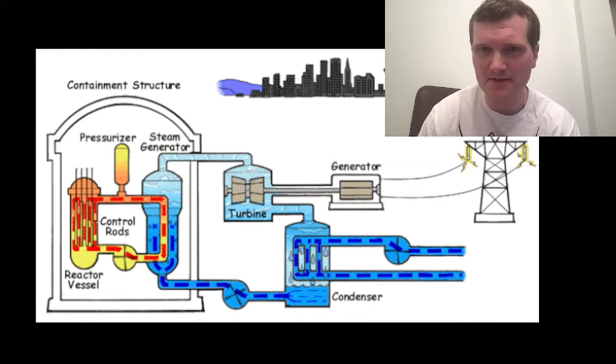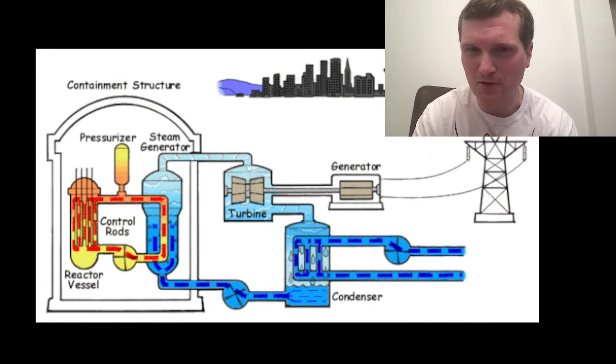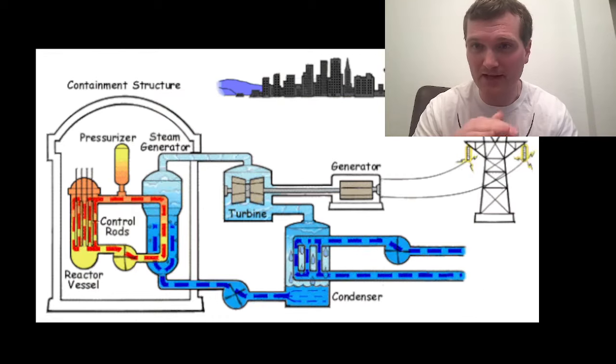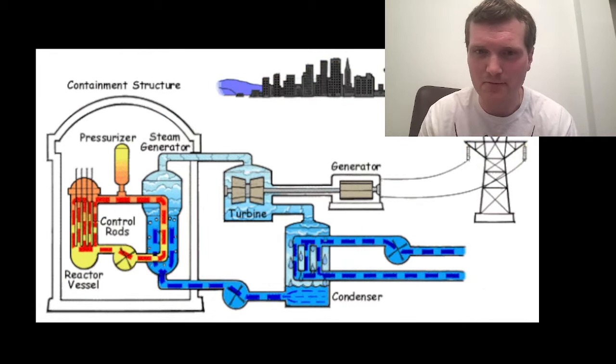As you can see on this diagram, the pressurizer is higher than the core. The core should be completely covered and filled with water. And the pressurizer level should have a bubble in it, a bit where there is not water.